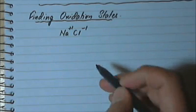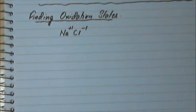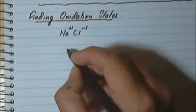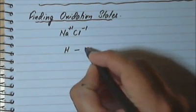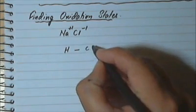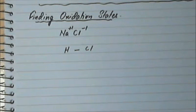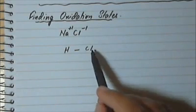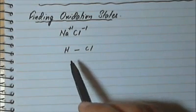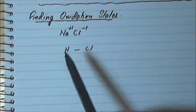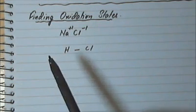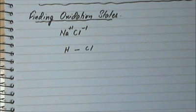But it is definitely an issue when you're dealing with covalent compounds. For example, you have HCl — hydrogen and chlorine bonded together by a covalent bond — so there are no charges here. We need to figure out a way to assign oxidation states, and we have already studied about electronegativities.